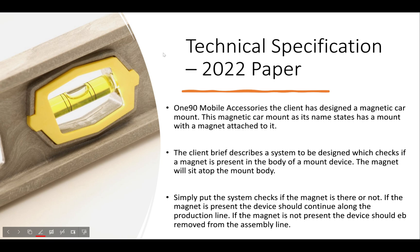It is always recommended to ask your teachers to give you a copy of the examiner's report and go through previous papers — 2021, 2020, and so forth. My introduction states: 190 Mobile Accessories has designed a magnetic car mount. The client brief describes a system to check if a magnet is present in the body of a mount device. Simply put, if the magnet is present the device should continue along the production line; if the magnet is not present, the device should be removed from the assembly line.